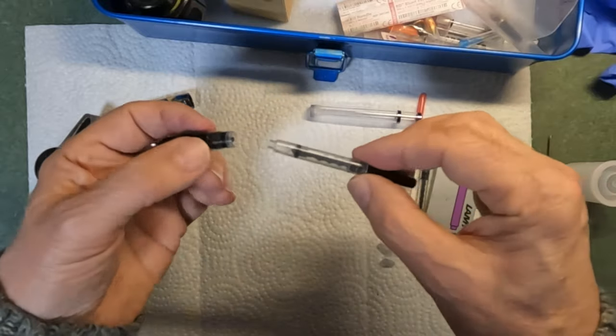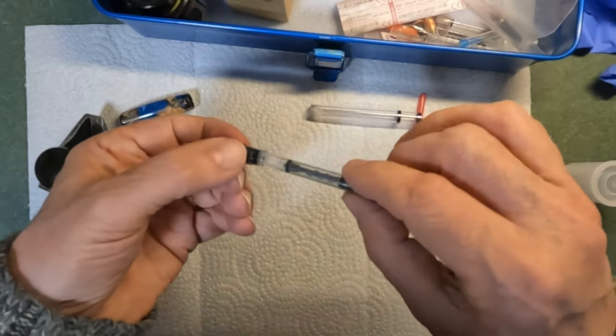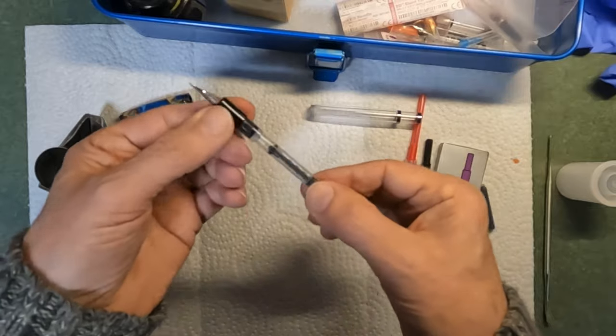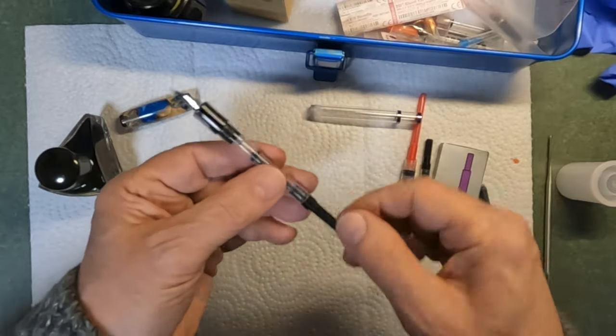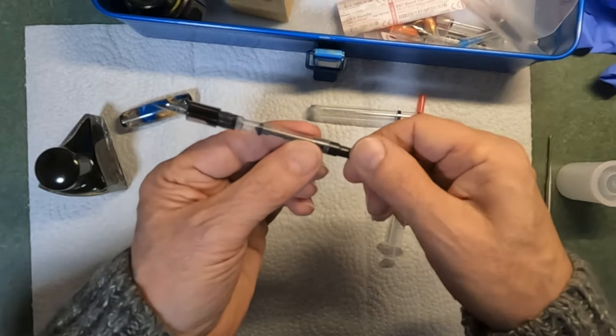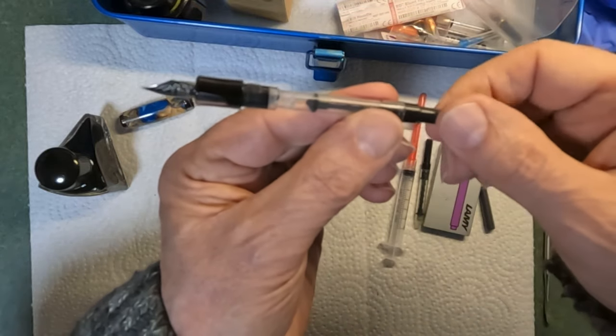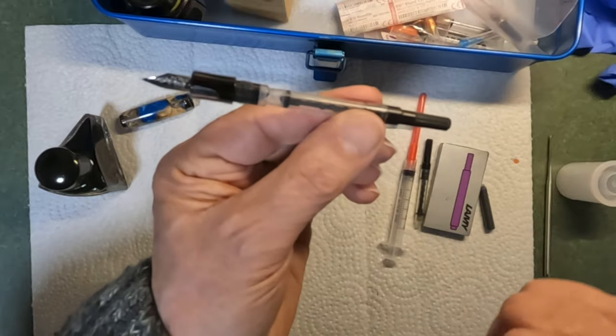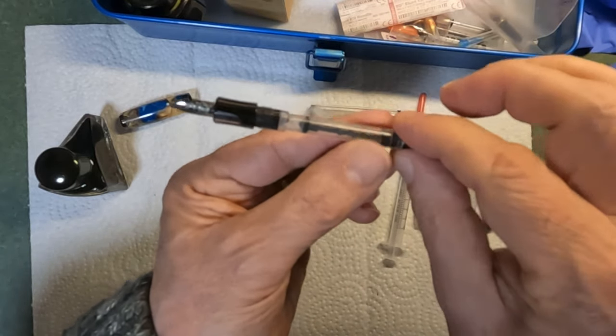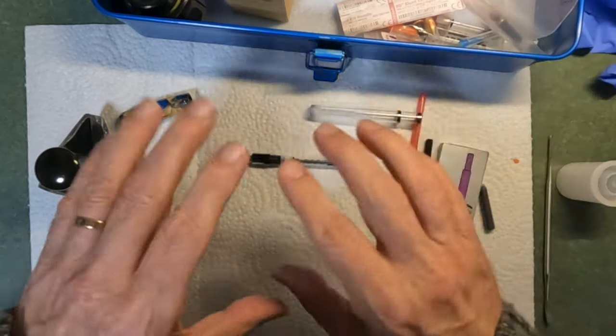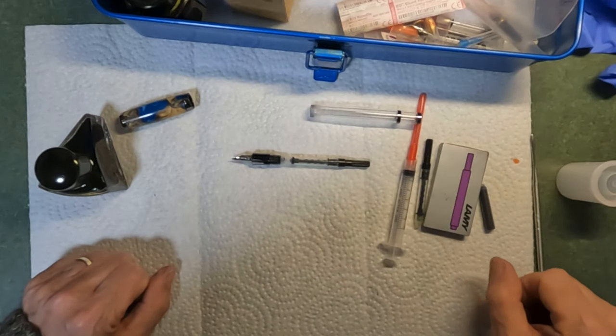The converter simply plugs into the pen and then it has this piston that will force the ink down into the feed section. So those are the basic parts of the pen.